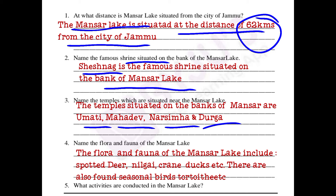Name the flora and fauna of the Mansur Lag. Flora and fauna means plants and animals. Flora and fauna of the Mansur Lag include various animals like spotted deer, nilgai, crayon, ducks, etcetera. Besides them, there are also found seasonal birds, tortoise, etcetera. This is tortoise — T-O-R-T-O-I-S-E.